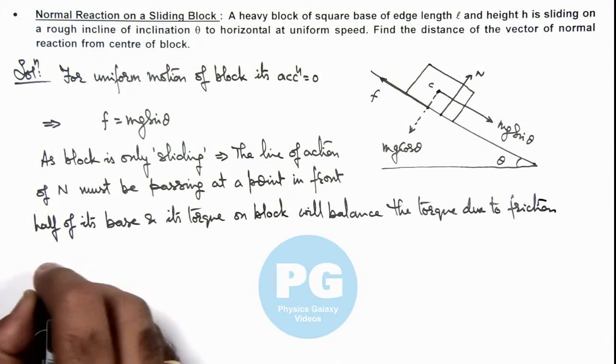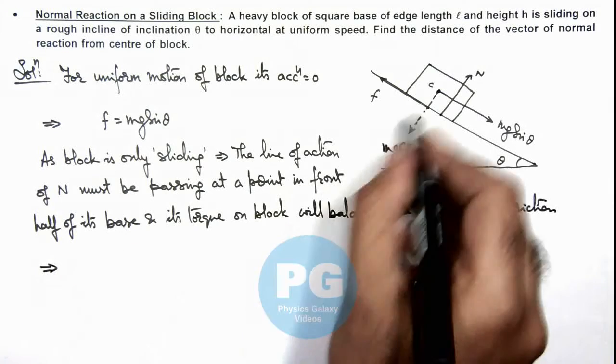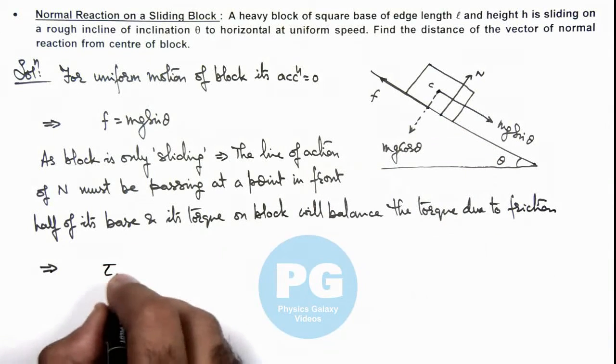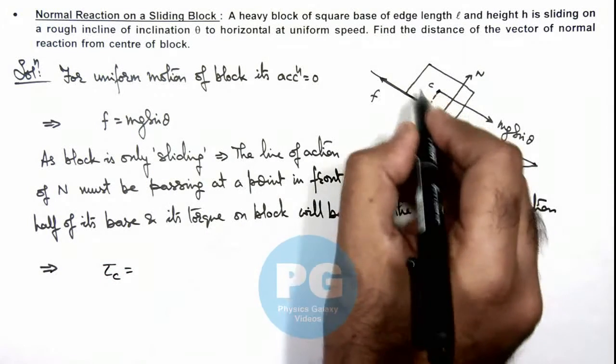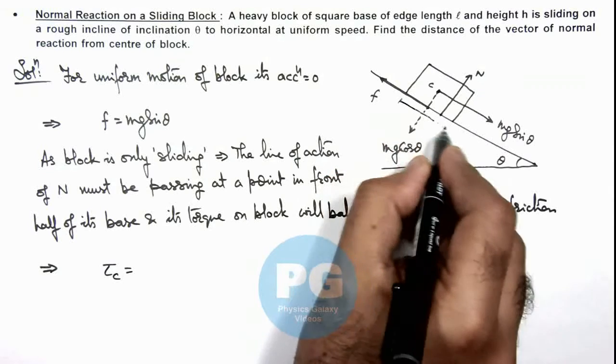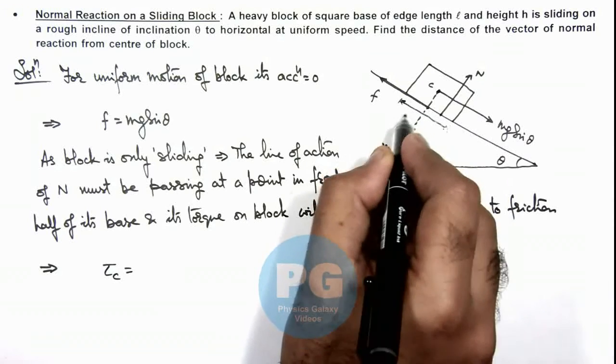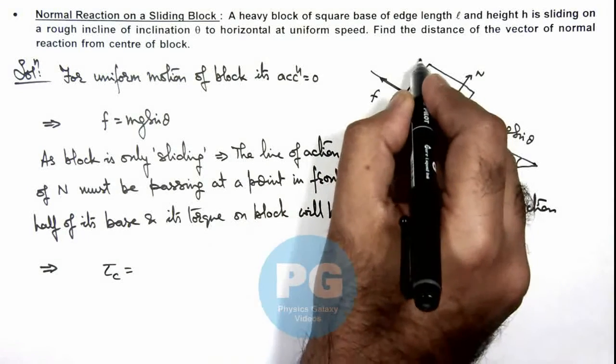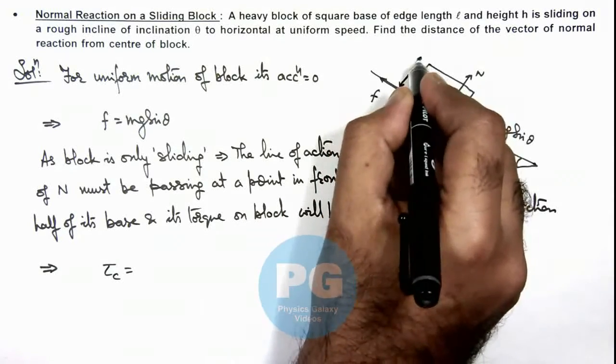So here we can write about center, we calculate the value of torque. We can say as the base length of the block is taken as l, and we consider its height to be equal to h.